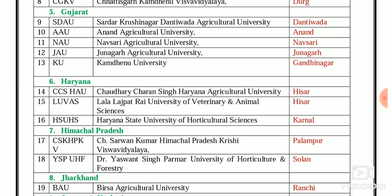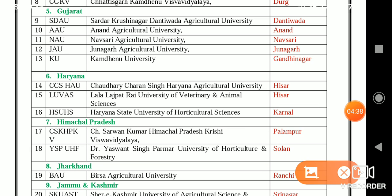In Gujarat, five SAUs: SDAU — Sardarkrushinagar Dantiwada Agriculture University; AU Anand — Anand Agriculture University; NAU — Navsari Agriculture University; JAU — Junagadh Agriculture University; and Kamdhenu University at Gandhinagar. In Haryana, three SAUs: CCSHAU — Chaudhary Charan Singh Agriculture University, Hisar; LUVAS — Lala Lajpat Rai University of Veterinary and Animal Sciences, Hisar; and HSHS — Haryana State University of Horticultural Sciences, Karnal.